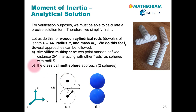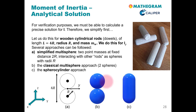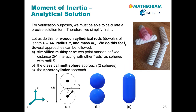The second approach is to use the classical multisphere approach, where we have two spheres, and we will consider that each of these two spheres has a finite moment of inertia. The third approach, and this is perhaps the most realistic, is the sphero-cylinder approach, as depicted here. The only thing we cannot do is take into account the sharp edges at the ends of our dowels.